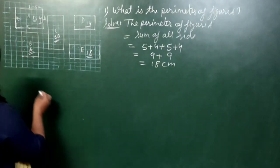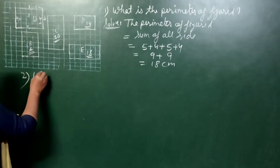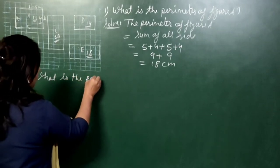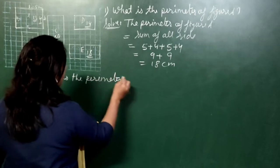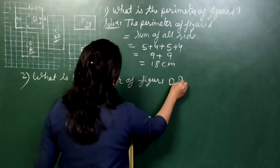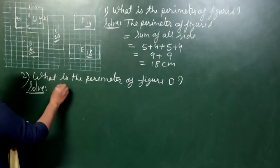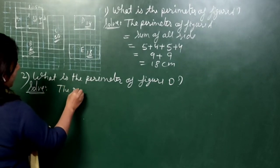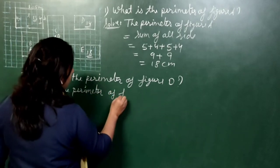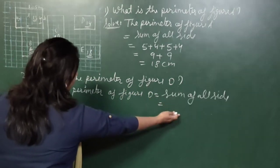Now see question number 2. Question number 2 asks: What is the perimeter of figure D? We use the same formula — sum of all sides. First, we write the perimeter of figure D equals sum of all sides.